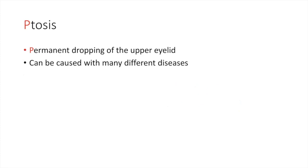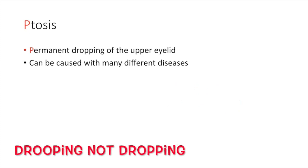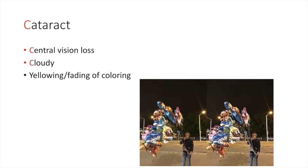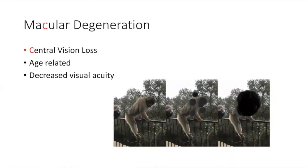Ptosis can be caused by diseases such as muscular dystrophy and myasthenia gravis. Cataract is a central vision loss condition where the natural lens becomes cloudy and there is decreased visual acuity. The primary symptom is deterioration of vision in the affected eye, poor night vision, and yellowing or fading of color. Cataract is categorized under central vision loss and involves cloudiness.